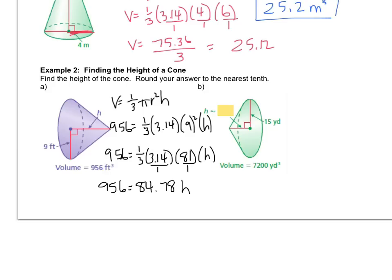So I've got 956 equals 84.78 h. Now all I have to do is inverse divide by 84.78. And so that gives me that h is equal to 11.276, etc. When I round to the nearest tenth, I get 11.3. So the answer is 11.3. And we're talking feet. And this is not volume and it's not area. So it's just a linear measurement feet.